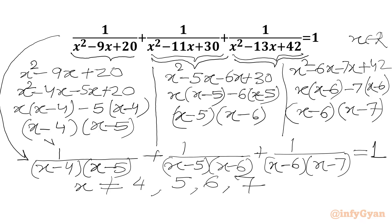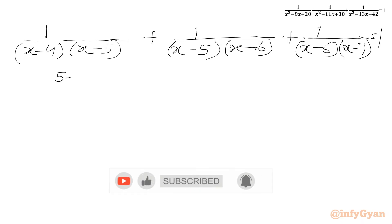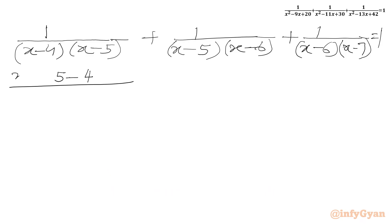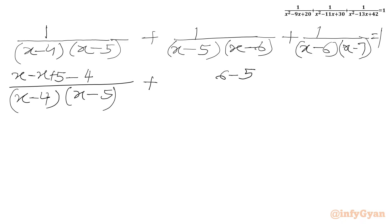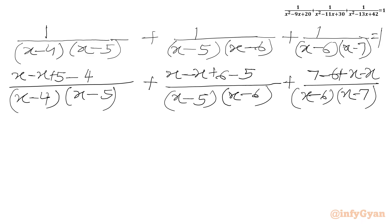Now we are going to rewrite the numerator 1 in terms of the denominator brackets. The numerator 1 can be written as (5 minus 4), which equals x minus (x minus 1) — adding x and subtracting x — so the first term becomes 1 over (x minus 4) minus 1 over (x minus 5). Similarly, 1 equals 6 minus 5, so the second term becomes 1 over (x minus 5) minus 1 over (x minus 6). And 1 equals 7 minus 6, so the third term becomes 1 over (x minus 6) minus 1 over (x minus 7). RHS is 1.